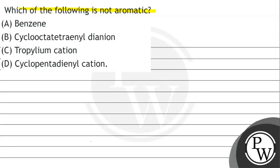The question says which of the following is not aromatic? Option A: benzene. Option B: cyclo-octa-tetraenyl dianion. Option C: tropylium. Option D: cyclopentadienyl cation.